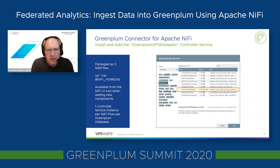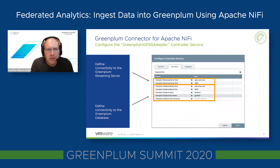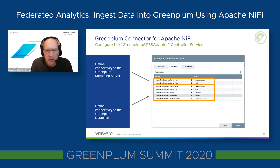We would need to first create the Greenplum GPSS adapter — we can see it listed under the list of controller services administrators can choose. Typically we need one controller service instance per NiFi flow per Greenplum database. When configuring this controller service, we provide two sets of information: first, where the Greenplum Streaming Server is located — the hostname and port number; and second, where the Greenplum database master is — the master hostname, port number, database name, username, and password.